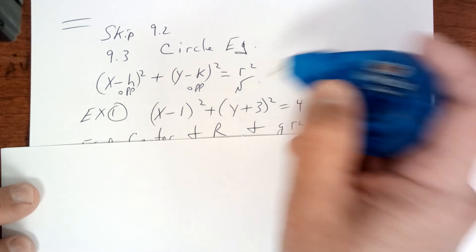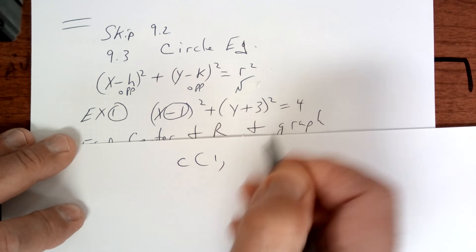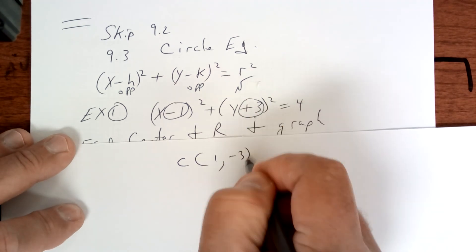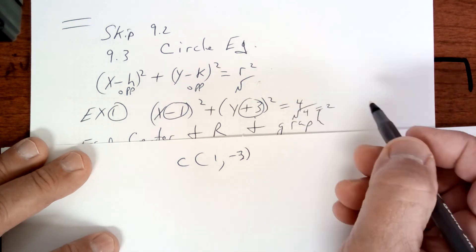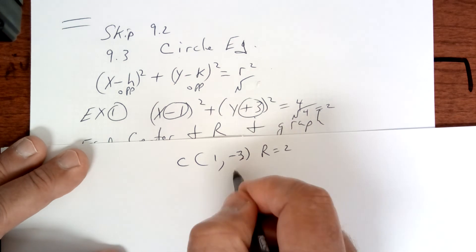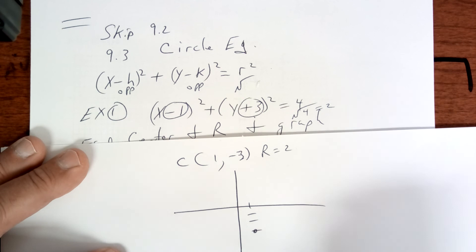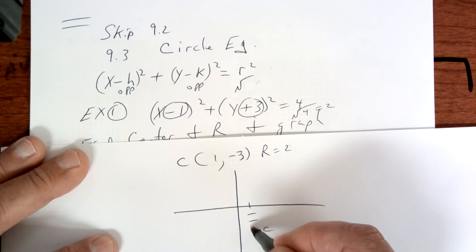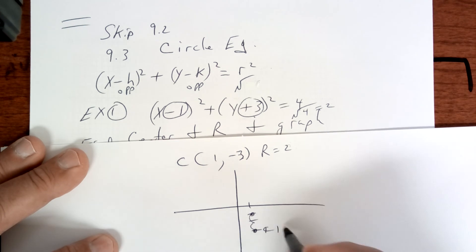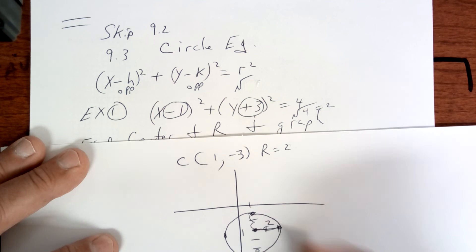To graph a circle, the opposite of negative one is one, so the center of the circle is going to be one. The opposite of negative three is positive three, so the center is at (1, 3) — wait, the opposite of that is negative three. Then you do the square root of 4 which equals 2, so the radius is 2. Go over one, down three for the center. Then go up two, right two, down two, and left two, place dots, and draw your circle.